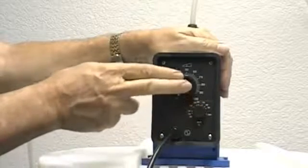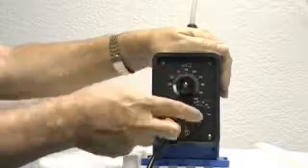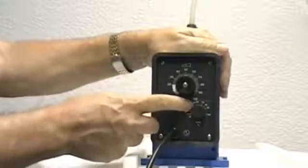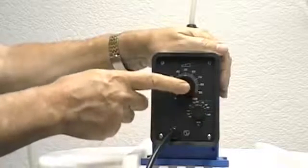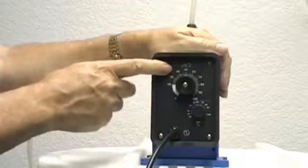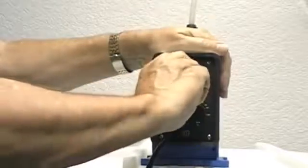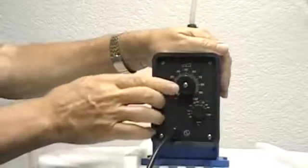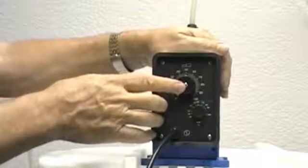As an example, for a six gallon a day pump with the stroke rate adjustment at 50%, there would be three gallons per day produced by the pump. If we adjust the stroke length to 50%, then that will reduce the flow rate to one and a half gallons per day.